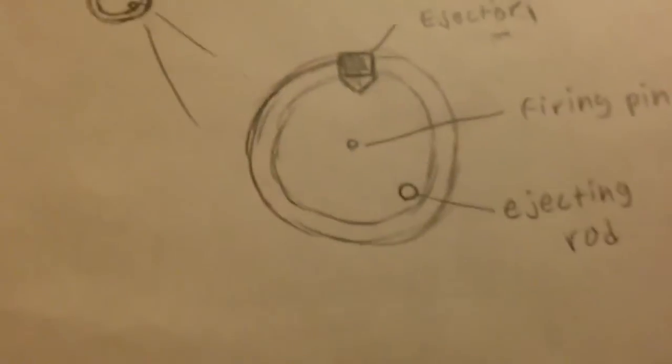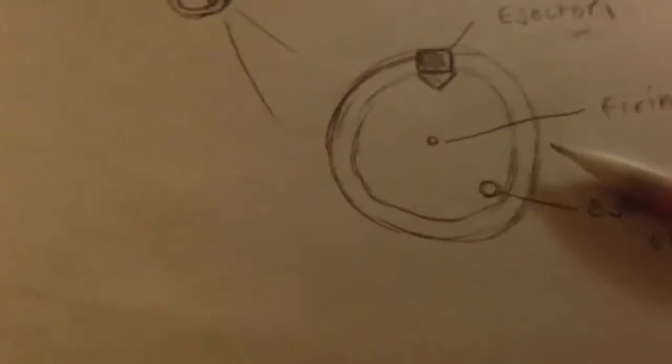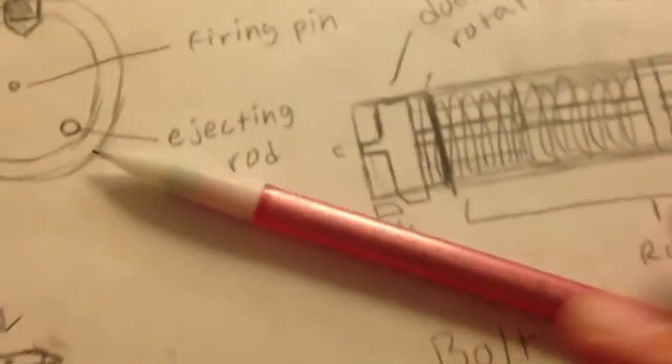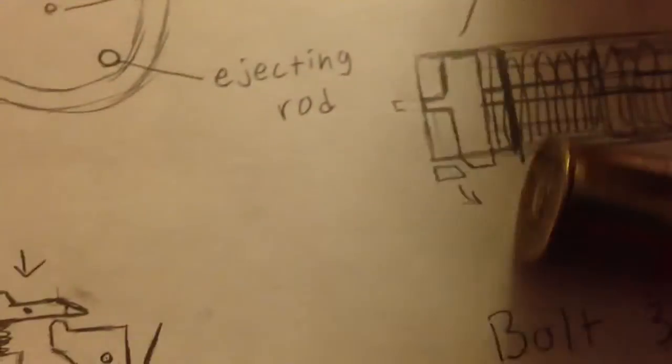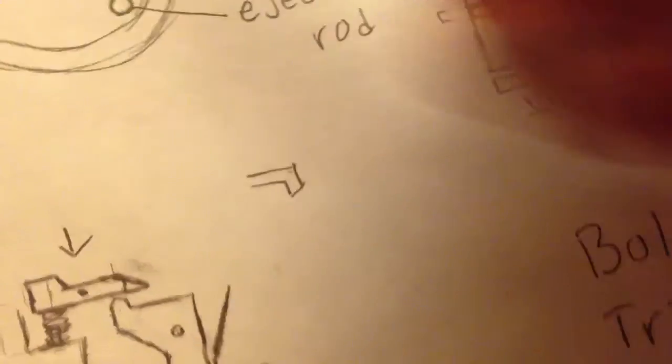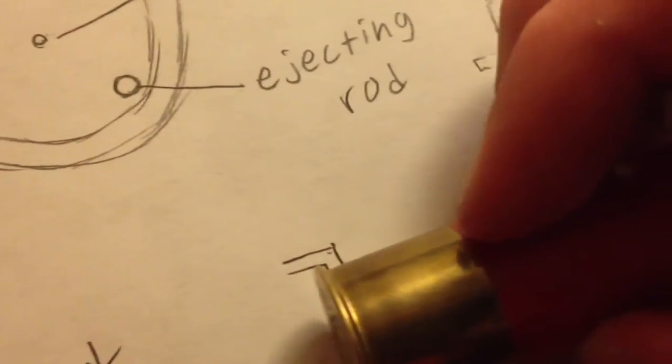So basically what happens is this holds onto the edge of the cartridge, like a shotgun shell with the little rim. What it does is it's shaped in a way that the bullet is able to slide through it and then catch.